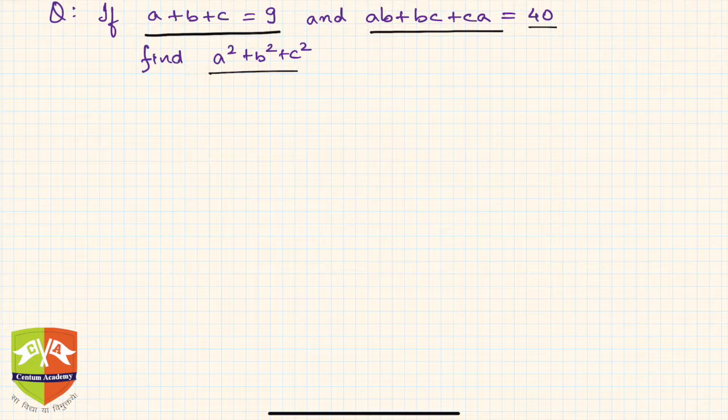We have to find out the value of a squared plus b squared plus c squared. The moment we see such questions, first thing is this is a trinomial and we are expected to find the value of square of the individual terms. So clearly it indicates that we have to use the trinomial square expansion. Let's start the solution.